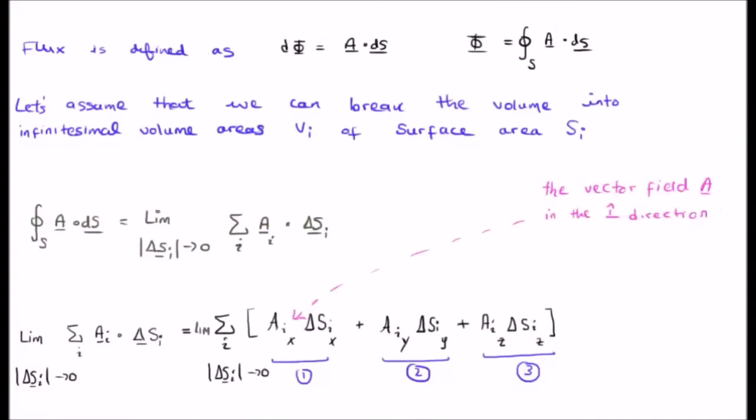Moving on. Let's assume that we can break the volume up into infinitesimal volume areas, volume elements V sub i of surface area S sub i. So we have our closed surface integral here on the center left of your screen, and we're saying that we're going to assume that we can break this up into a sum. So the sum is going to be the limit of the sum of A sub i dot delta S sub i.